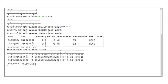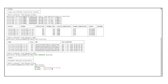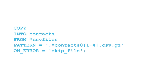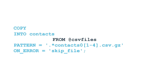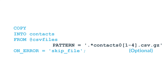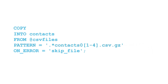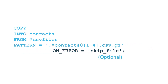Now we are ready to load data from the staged files into the Contacts table. First, specify a virtual warehouse to use, then use the COPY command to load the files. The INTO parameter specifies the table where the data will be loaded. FROM identifies the location of the staged files — in this case, the CSV file stage. PATTERN specifies the data files to load; here we are loading from data files with names that include the numbers 1 through 4. ON_ERROR tells the command what to do when it encounters errors in the file. Snowflake provides powerful options for error handling while data loading, which will be covered in a later video.